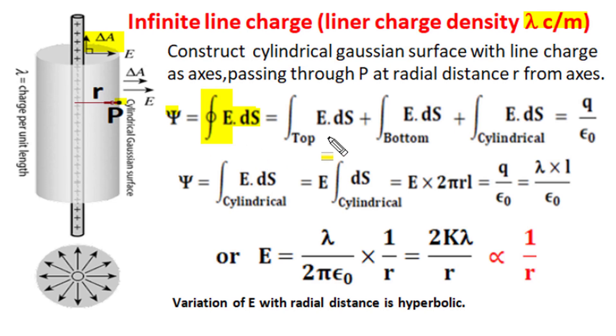So the dot product becomes a simple product as cos 0 is 1 and due to symmetry the magnitude of E is constant everywhere on the cylindrical surface.